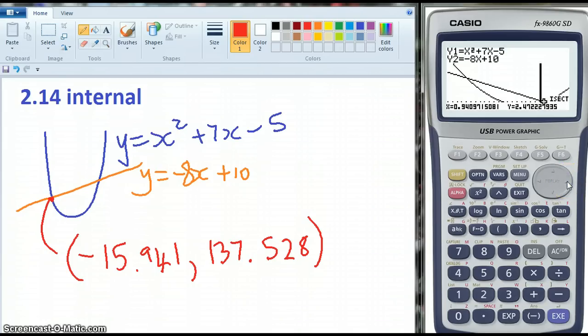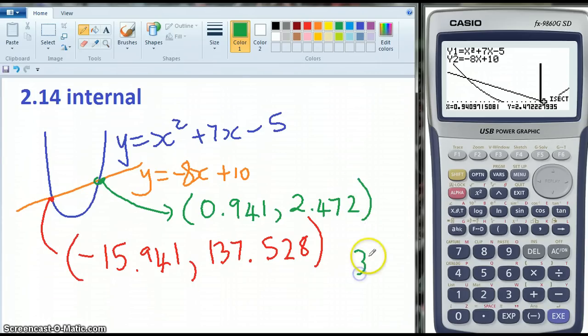I push the button to the side, and I've got my second point of intersection. This one here I happen to know now is 0.94, rounding it to 3DP, 2.472, and that's all to three decimal places.